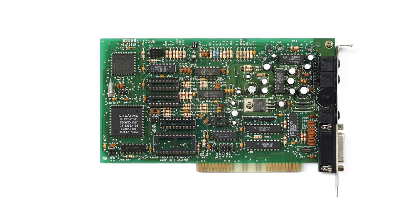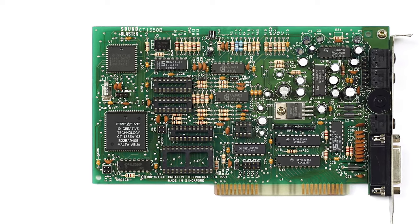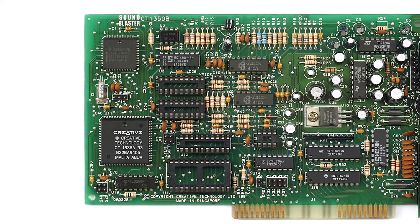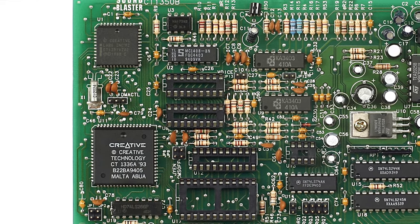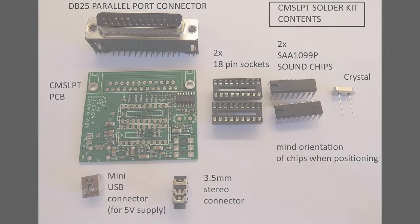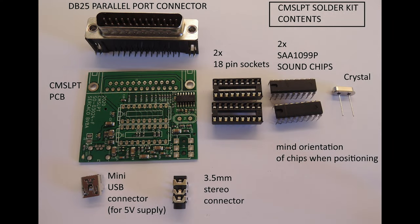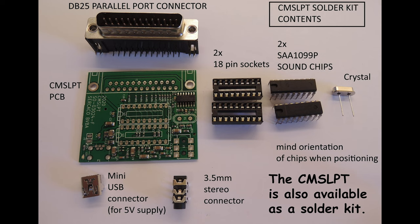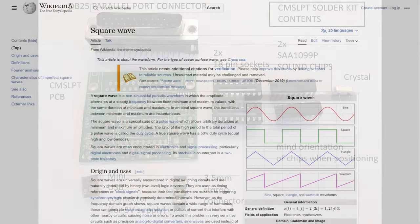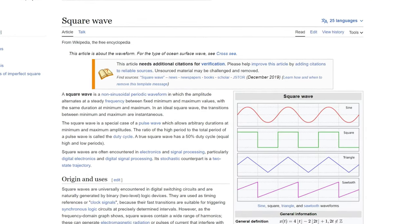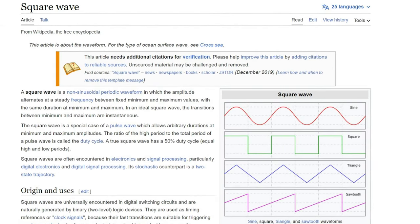In SoundBlaster 1.5 and 2.0, they had sockets for these older chips, but the chips were sold separately. Since Creative used two of the SAA 1099 chips, we had a total of 12 channels of square wave stereo sound, including 4 channels for noise. Not bad for 1987.